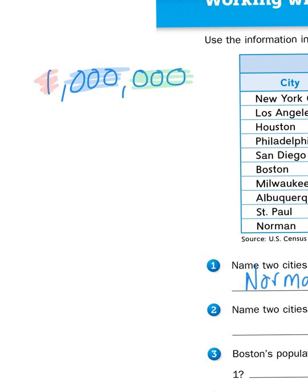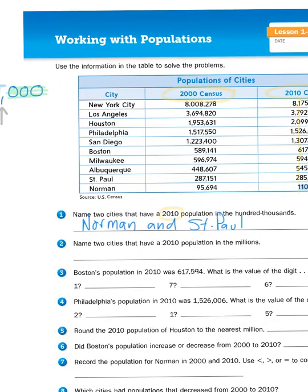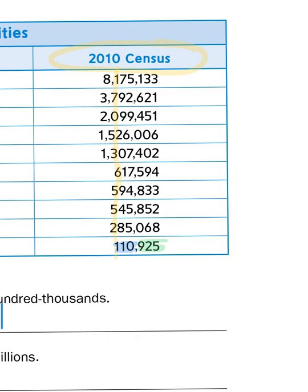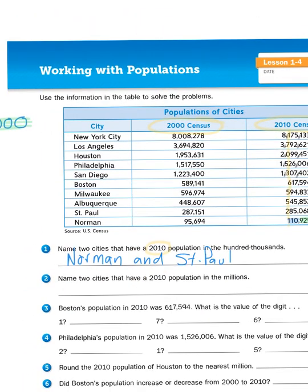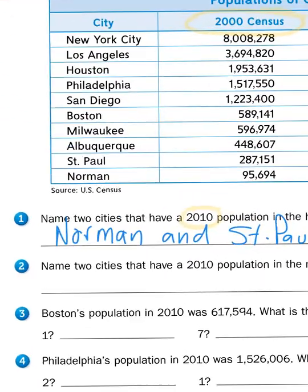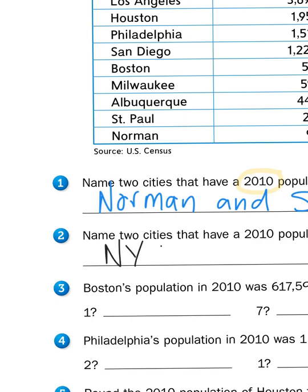In order to show that we've hit a seventh digit and a new category of place values, we add a second comma. The more commas you see in a number, the larger the place value involved. To quickly scan for numbers in the millions, all you have to do is look for that second comma — if it has two commas, it's in the millions. So all the cities at the top of this list are in the millions in 2010. I'll pick New York City and Los Angeles — NYC and L.A.